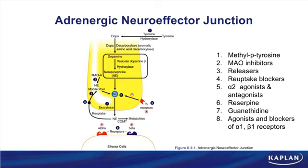In order to synthesize norepinephrine, we start with tyrosine. The conversion of tyrosine to DOPA by the enzyme tyrosine hydroxylase is the rate-limiting step in the synthesis of norepinephrine.